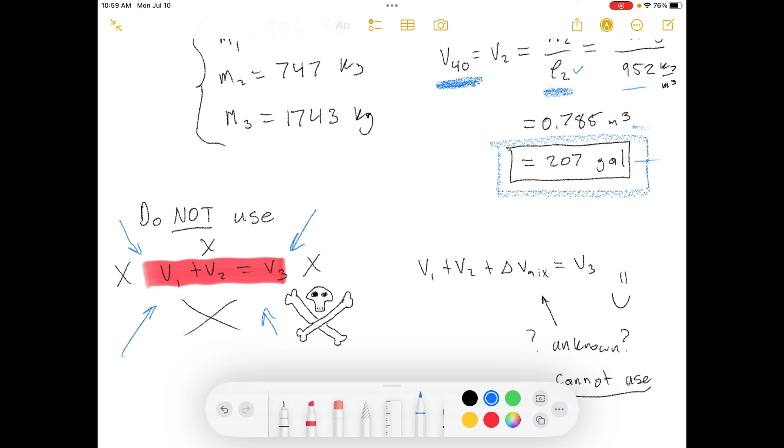So you cannot say volume of stream one plus volume of stream two equals volume of stream three. The volumes, when you add them together, literally shrink or expand. They literally physically change volume when you mix them together. It seems kind of crazy, but imagine you have a bottle of sand or a bottle of gravel or something like that, and then you pour water into that bottle.